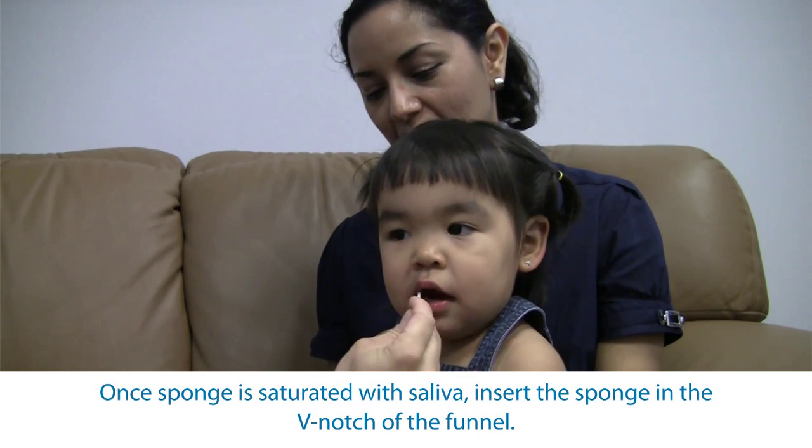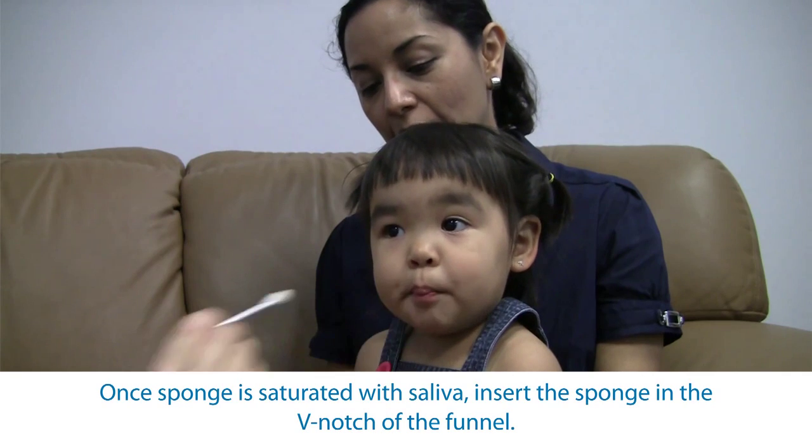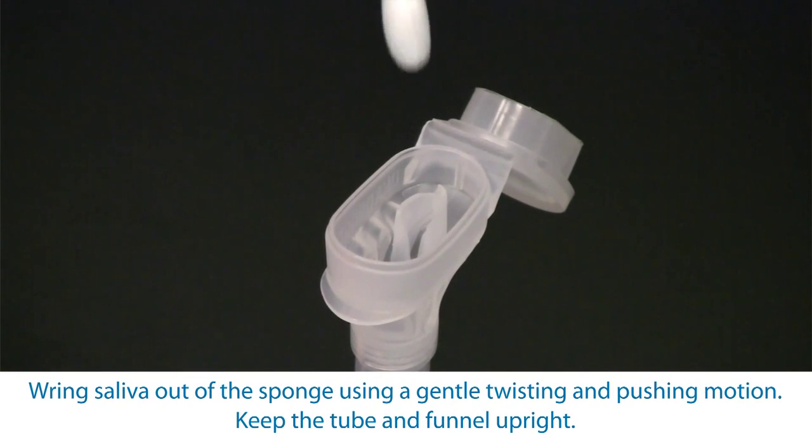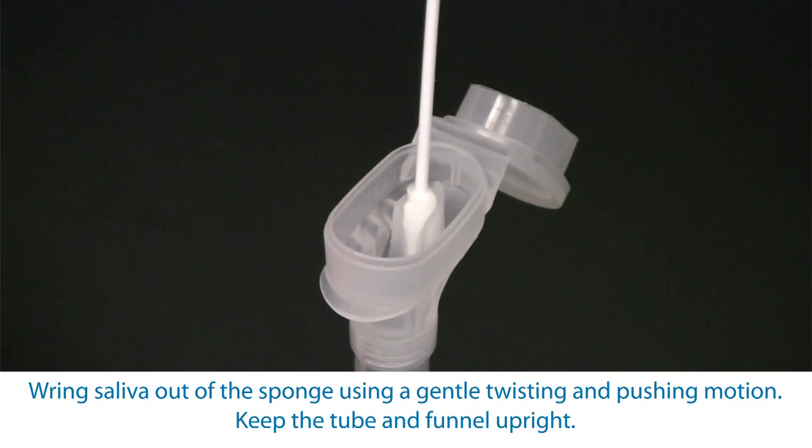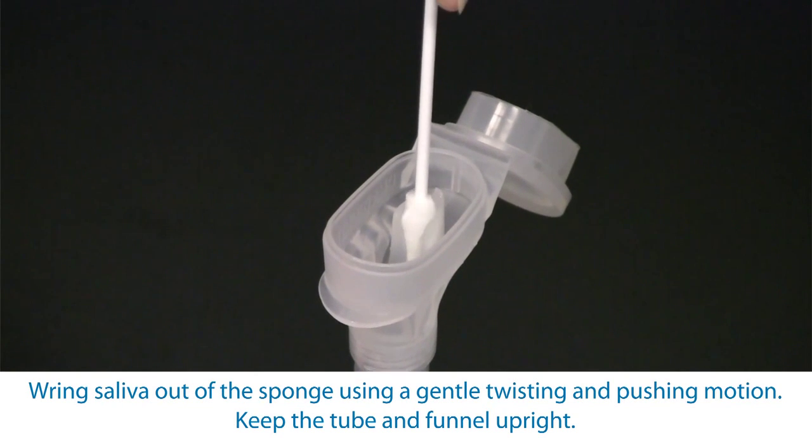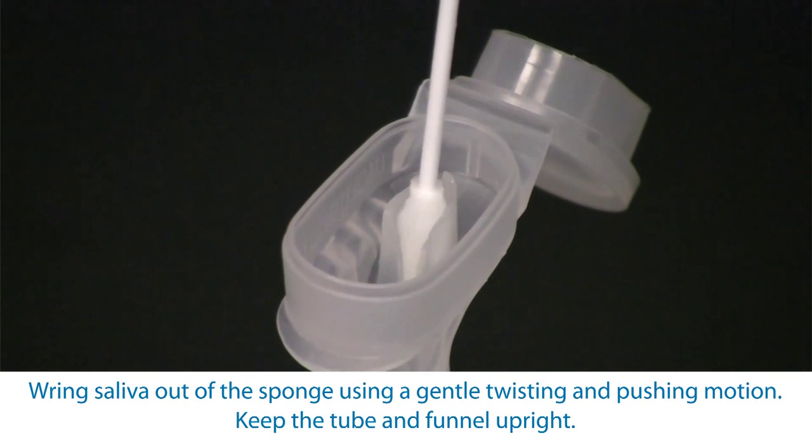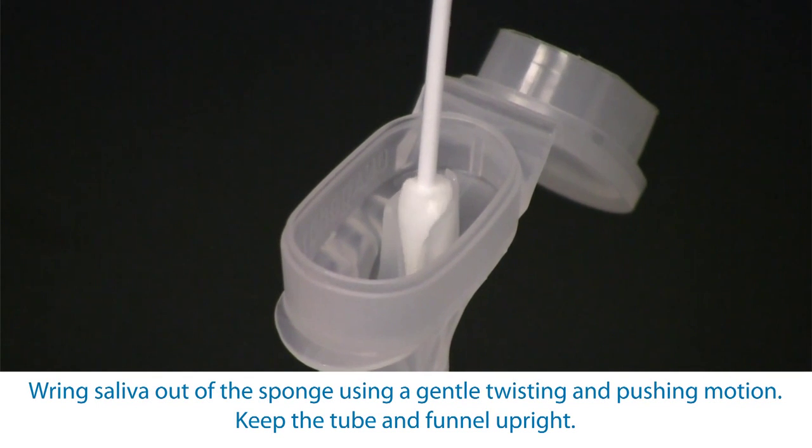Once the sponge is saturated with saliva, insert the sponge into the V-notch of the funnel. Wring saliva out of the sponge using a gentle twisting and pushing motion against the inner wall of the V-notch.